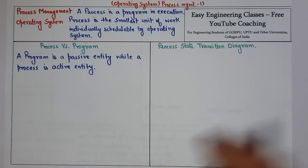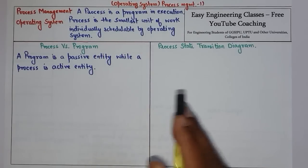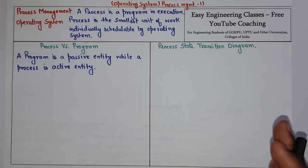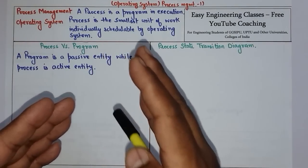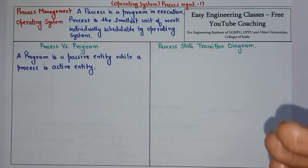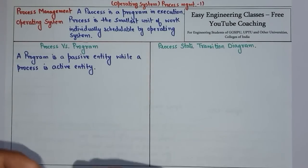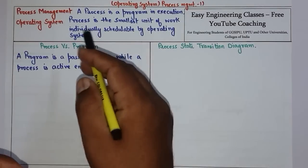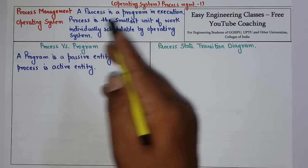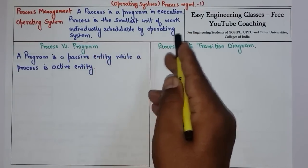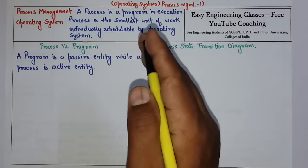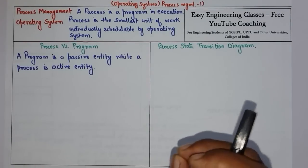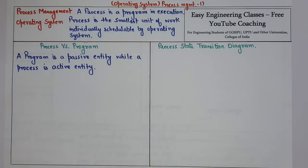So what is a process? A process is a program in execution. We have two entities in any operating system: one is a process and one is a program. A process is defined as a program which is executing or running in the system. Process is also defined as the smallest unit of work which is individually scheduled by the operating system, since the operating system schedules different works for the CPU to execute.